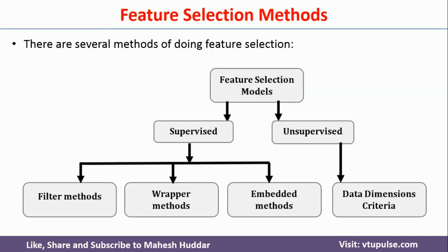Feature selection methods are mainly divided into two parts: supervised feature selection and unsupervised feature selection. Supervised feature selection is further divided into three groups: filter methods, wrapper methods, and embedded methods. We will now try to understand each of these methods one by one.